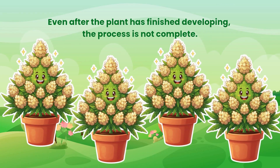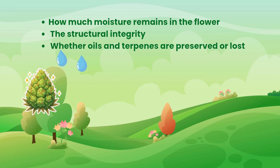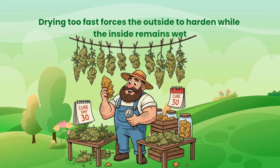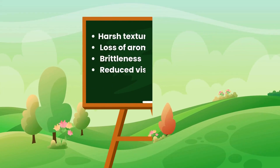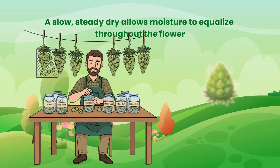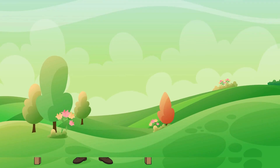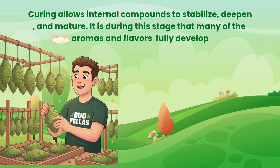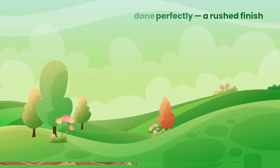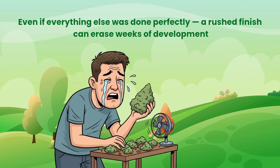Even after the plant has finished developing, the process is not complete. Drying determines how much moisture remains in the flower, the structural integrity, and whether oils and terpenes are preserved or lost. Drying too fast forces the outside to harden while the inside remains wet — this causes harsh texture, loss of aroma, brittleness and reduced visual appeal. A slow, steady dry allows moisture to equalise throughout the flower. Curing allows internal compounds to stabilise, deepen and mature. It is during this stage that many of the aromas and flavours fully develop. Even if everything else was done perfectly, a rushed finish can erase weeks of development.